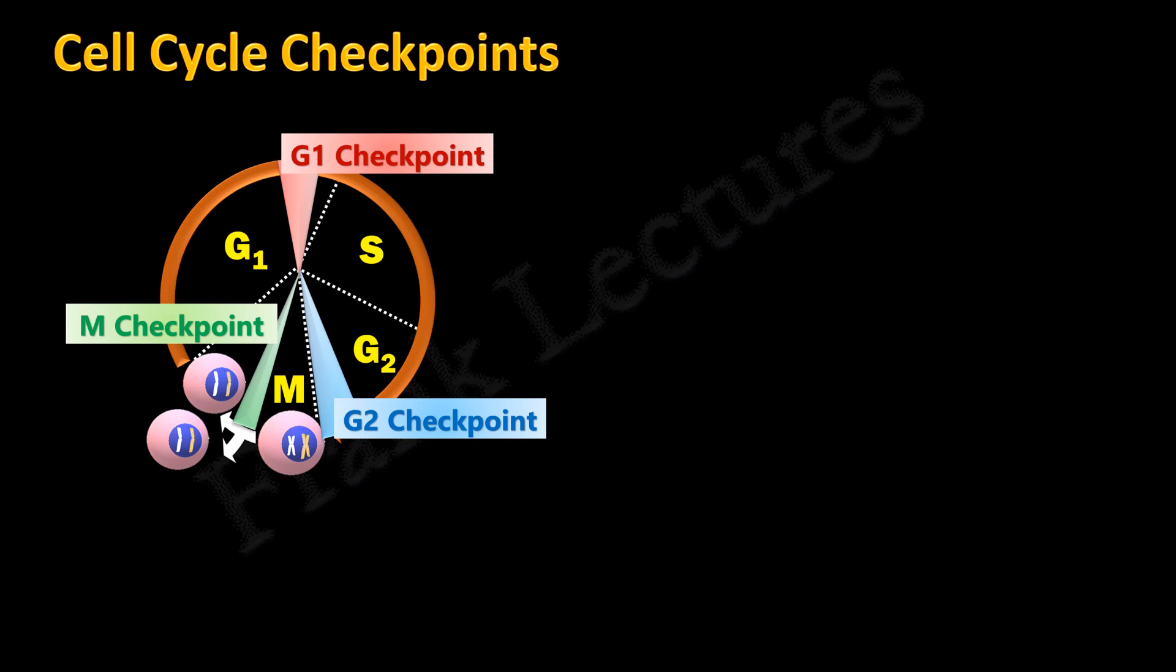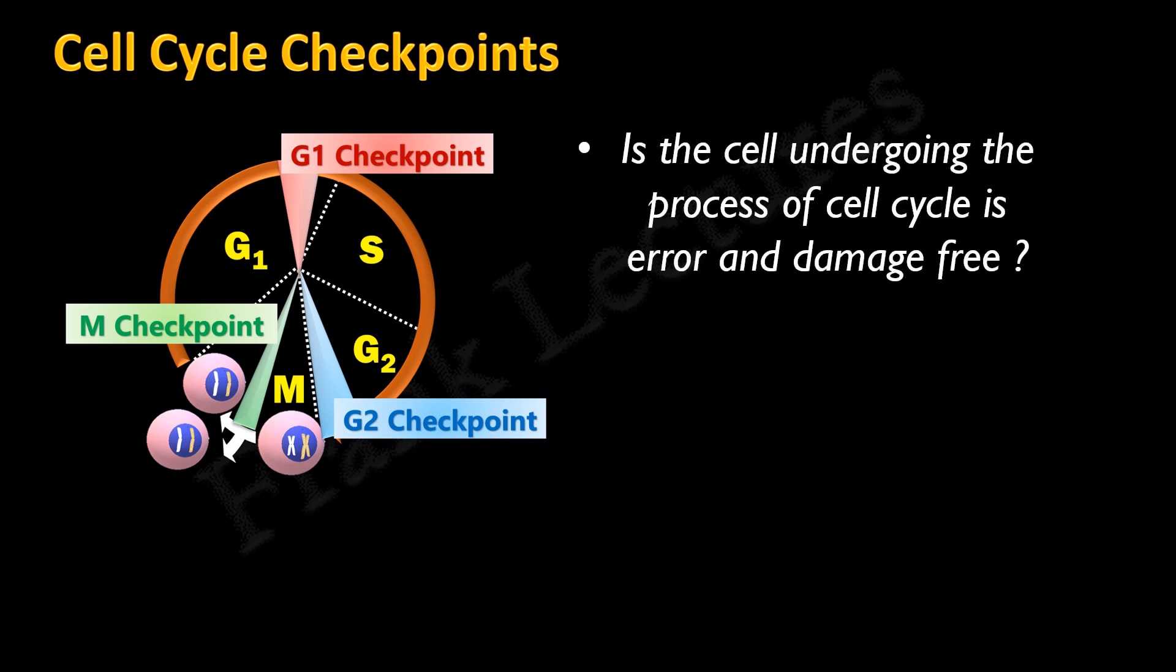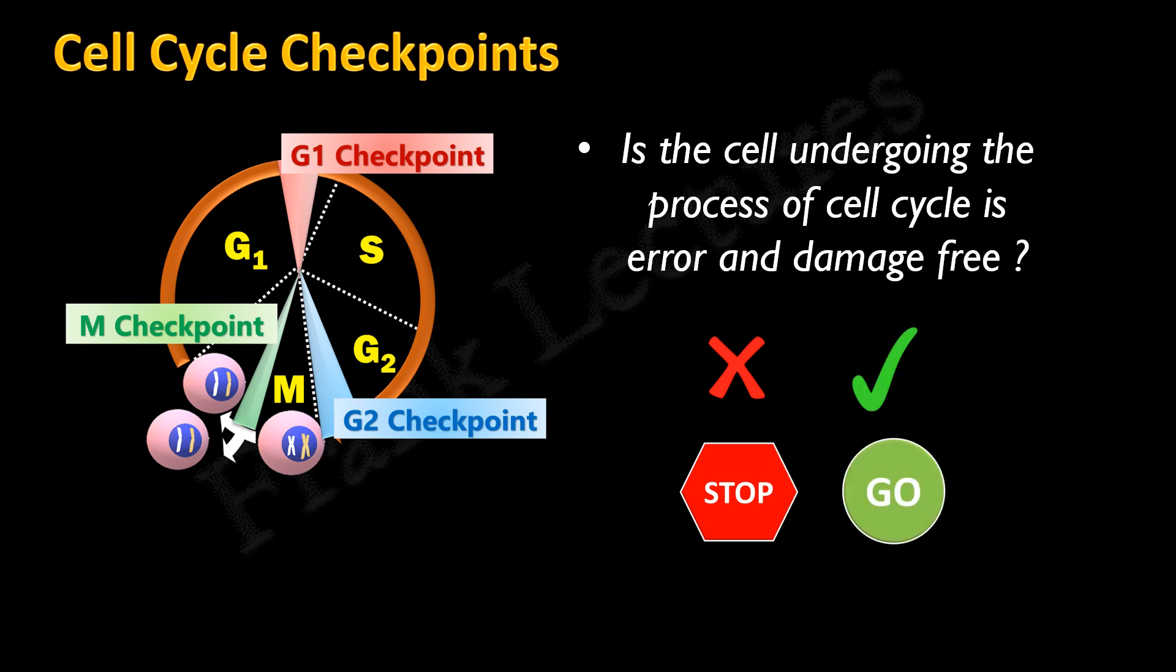So all three key checkpoints prevent the division of cells that have errors or damages. If errors are detected the process of the cell cycle is halted. The cell cycle is regulated at these checkpoints by both internal and external signals, and these internal and external signals together form the cell cycle control system which will be explained in our next video lecture. Thank you for watching.